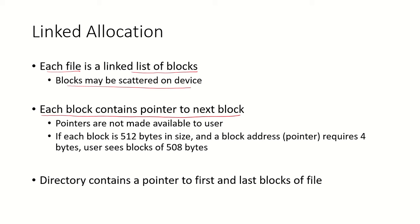In this scenario, each block contains a pointer to the next block. These pointers are not available to the user — they are accessible to the file system only. For example, if each block is 512 bytes in size and the pointer requires 4 bytes, then since the pointer is stored within that block, the user only sees 508 bytes of usable space. Out of 512 bytes, the pointer utilizes 4 bytes, leaving 508 bytes available to the user.